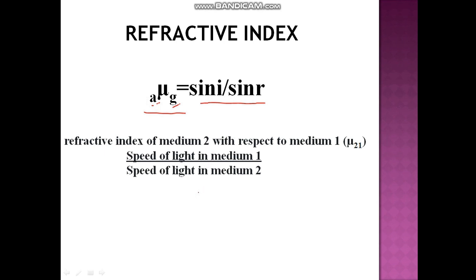Refractive index can also be calculated in terms of velocity of light, since the bending of light takes place due to the difference in the velocity of light in different mediums. So, refractive index in terms of speed of light is given by speed of light in medium 1 to speed of light in medium 2.